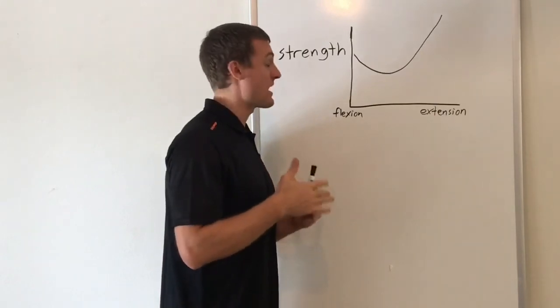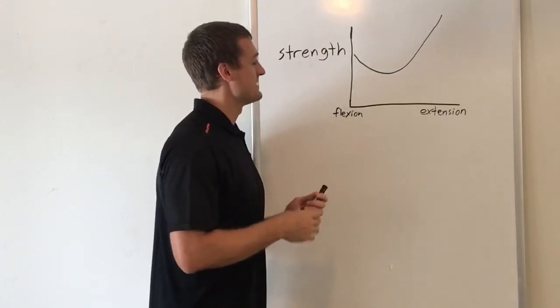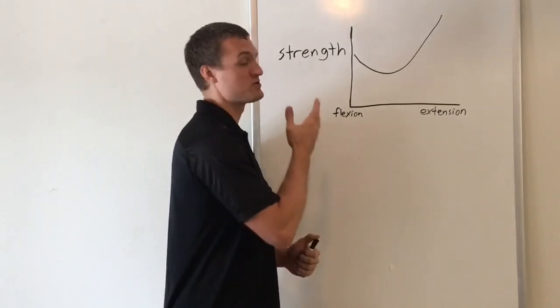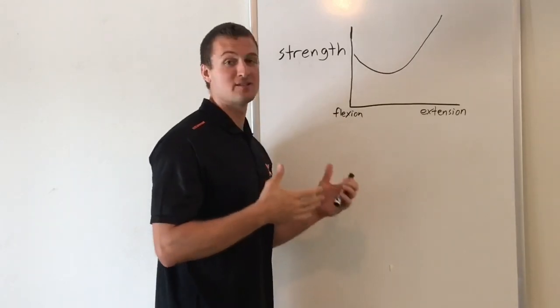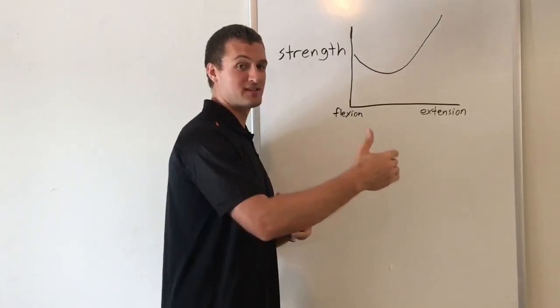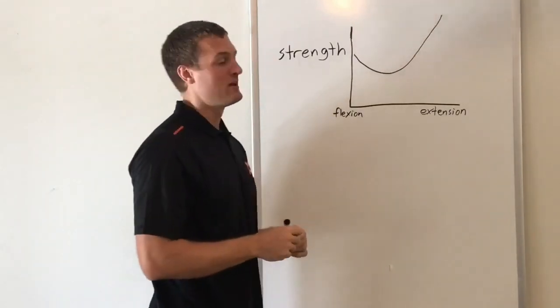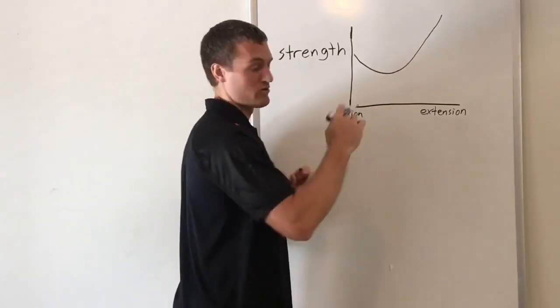So now let's talk about accommodating resistance. Accommodating resistance is an attempt to match the resistance of an exercise to the strength curve. So what do we do? We use bands and chains to increase resistance as you move into fuller extension.